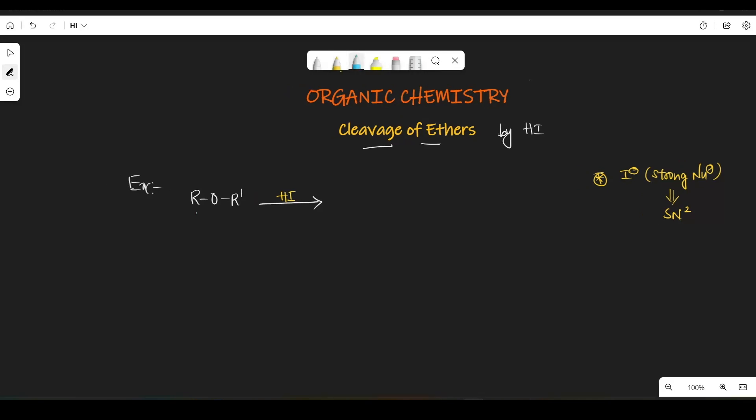Now let's say for example this is primary alkyl group and this is secondary alkyl group. As we know that SN2 the reactivity order for this is: CH3X is greater than primary is greater than secondary is greater than tertiary right? For SN2 steric hindrance should be less. If steric hindrance should be less, then the nucleophile attack on that side right?